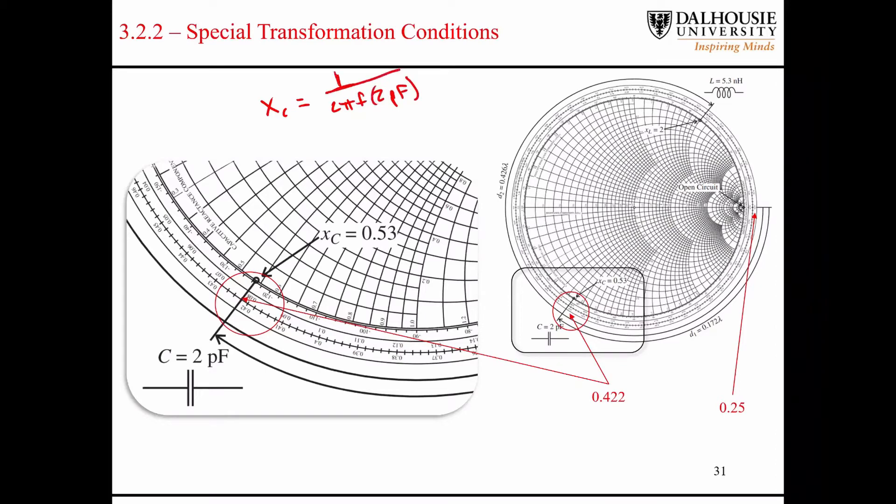So we want a capacitor of 2 picofarads. So the expression for the reactance would be given by this equation, obviously. But when we normalize it to 50 ohms, since our system is 50 ohms, we end up with 0.53.